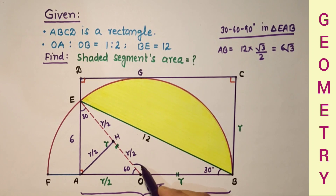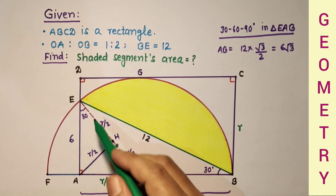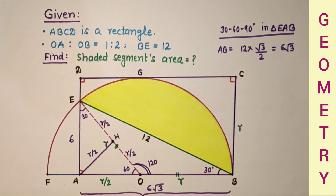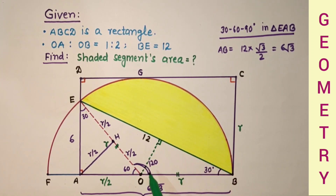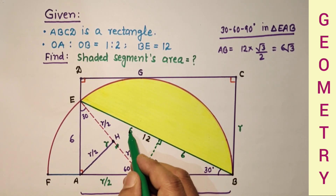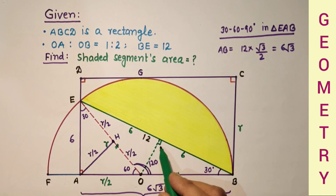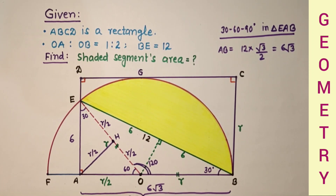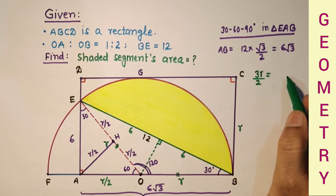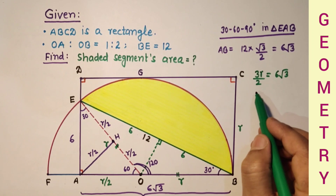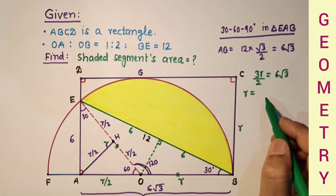This angle will be a linear pair and will be 120 degrees. The shaded area equals the sector's area minus the triangle's area. To get the triangle's area we use half base times height, so drop a perpendicular as the height. The chord is bisected giving two segments of 6 each. Using 30-60-90 again, R plus R by 2 equals 6 root 3. So 3R by 2 equals 6 root 3, therefore R equals 4 root 3.